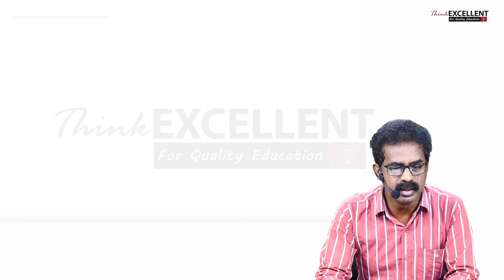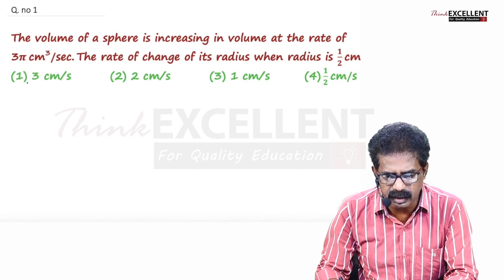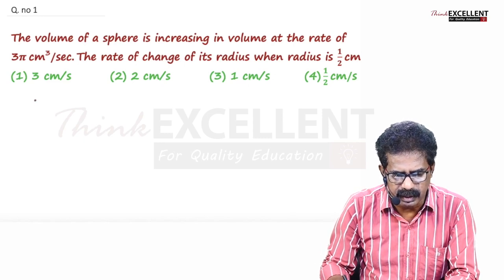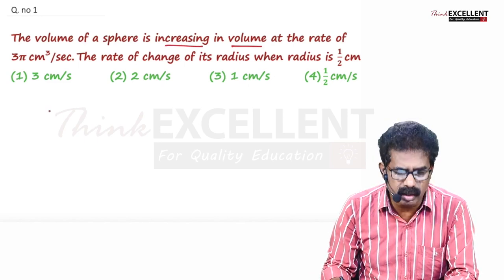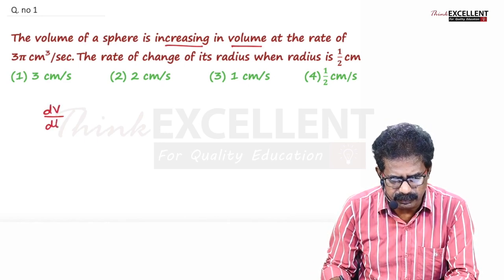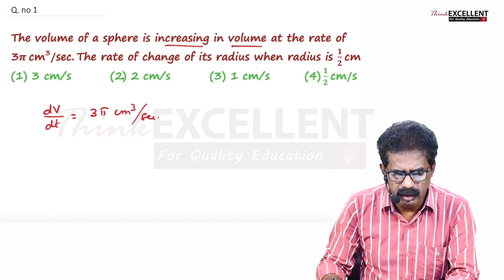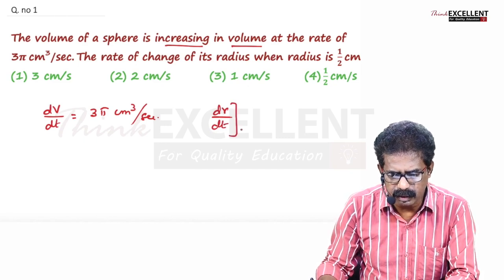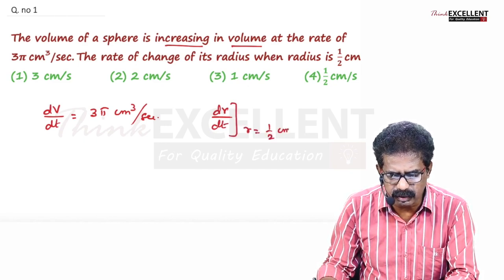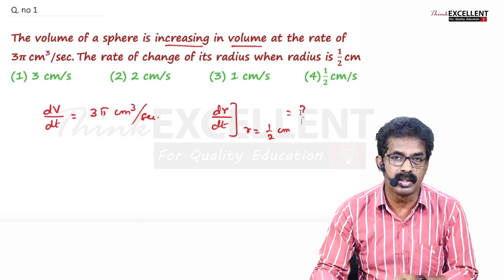Let us see the first question. The volume of a sphere is increasing at the rate of 3π cm³ per second. The rate of change in volume is given, so dv/dt is given as 3π cm³ per second. They ask the rate of change of its radius, find dr/dt when the radius is half a centimeter. You have to identify what is given and what they ask to find.